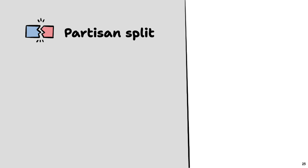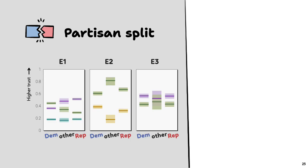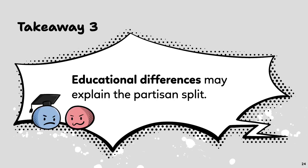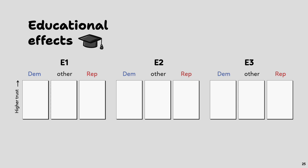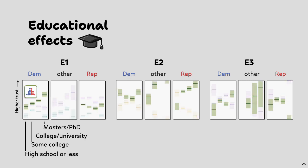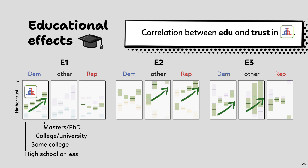We also observe a strong partisan split in which representation people trust most. Aggregating all 10 elections across experiments, results in experiments 2 and 3 are consistent across different parties, but in experiment 1, Democrats trust dot plot the most while Republicans and other party supporters trust text the most. However, this partisan split is likely explained by educational differences — people with more advanced degrees trust dot plot more regardless of partisanship. Since the Democratic Party in the U.S. has more educated supporters in recent years, these educational differences explain the observed partisanship.